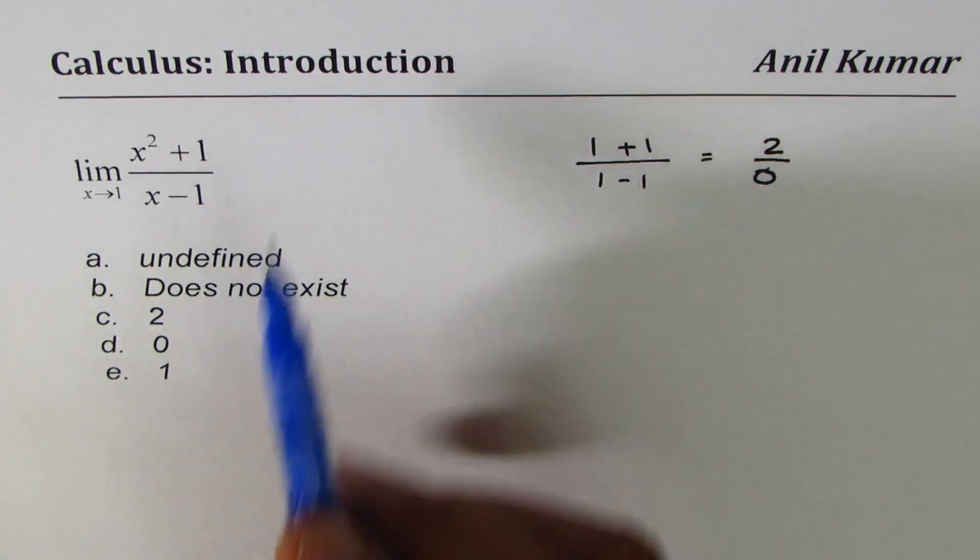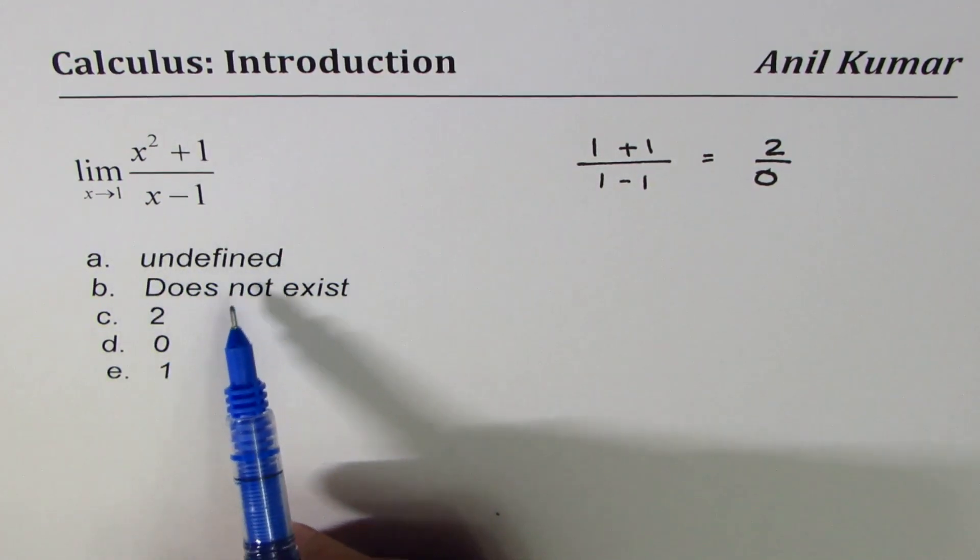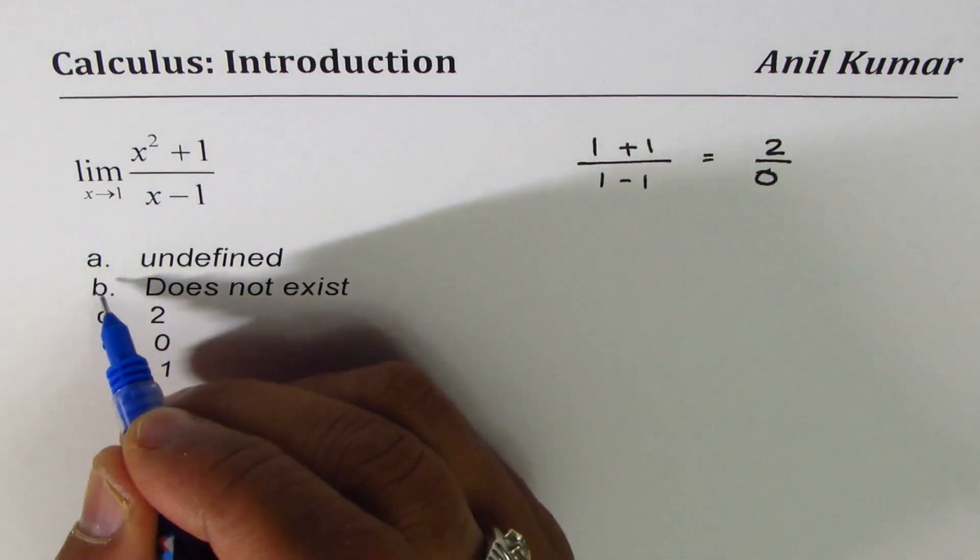Now in the case of limits, we don't say undefined, we use does not exist, right?